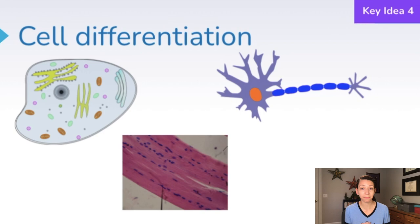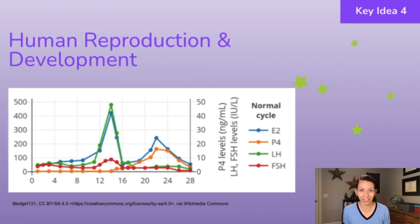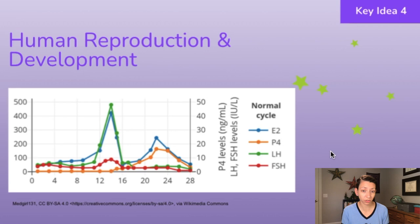Human reproduction and development are influenced by a lot of different factors, including hormones, the environment, and gene expression. In both males and females, our reproductive cycle is regulated by the cycling of different hormones throughout the body, including testosterone, estrogen, and progesterone. The cycling of hormones during the female menstrual cycle involves a series of natural changes in hormone levels.